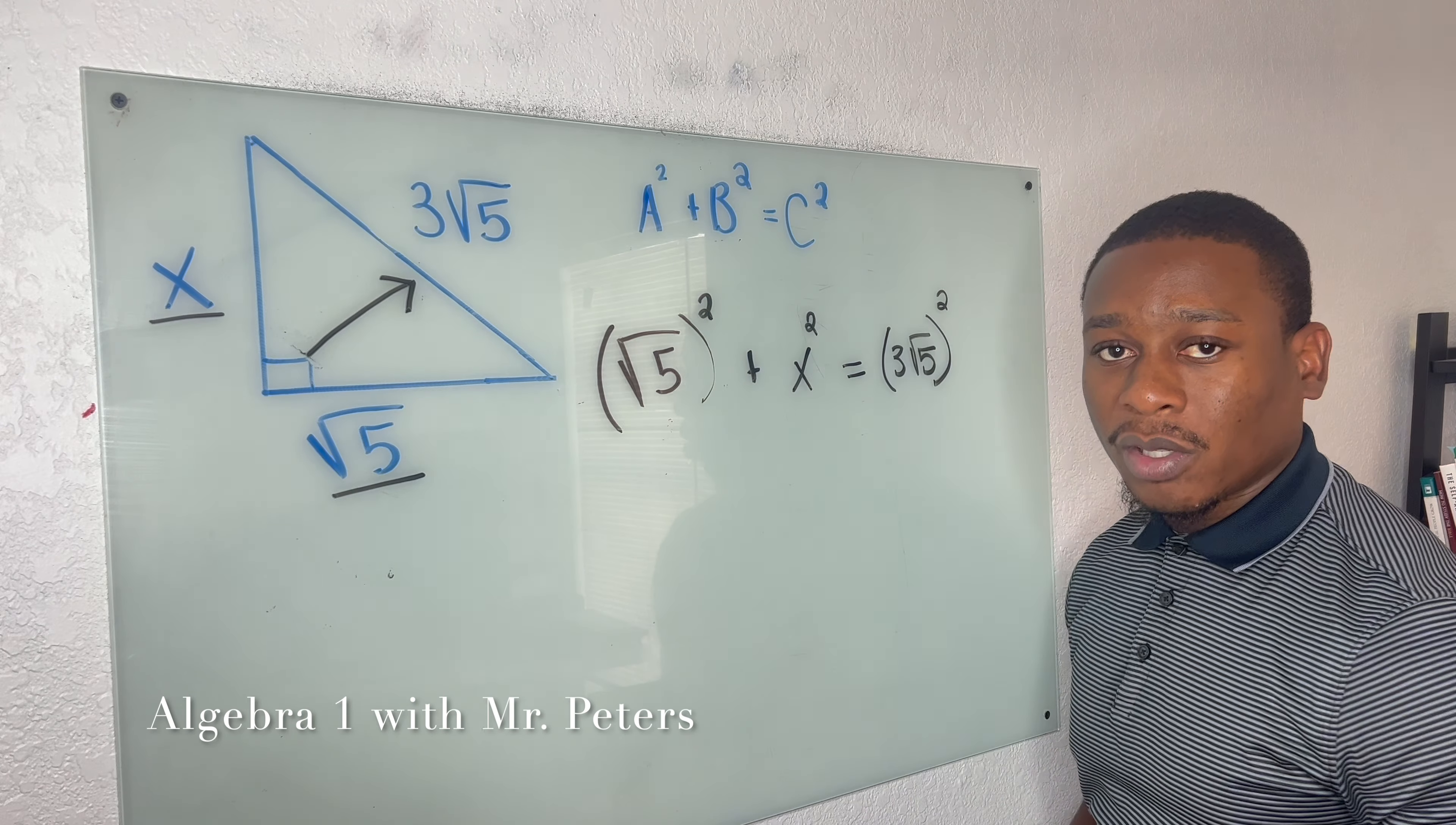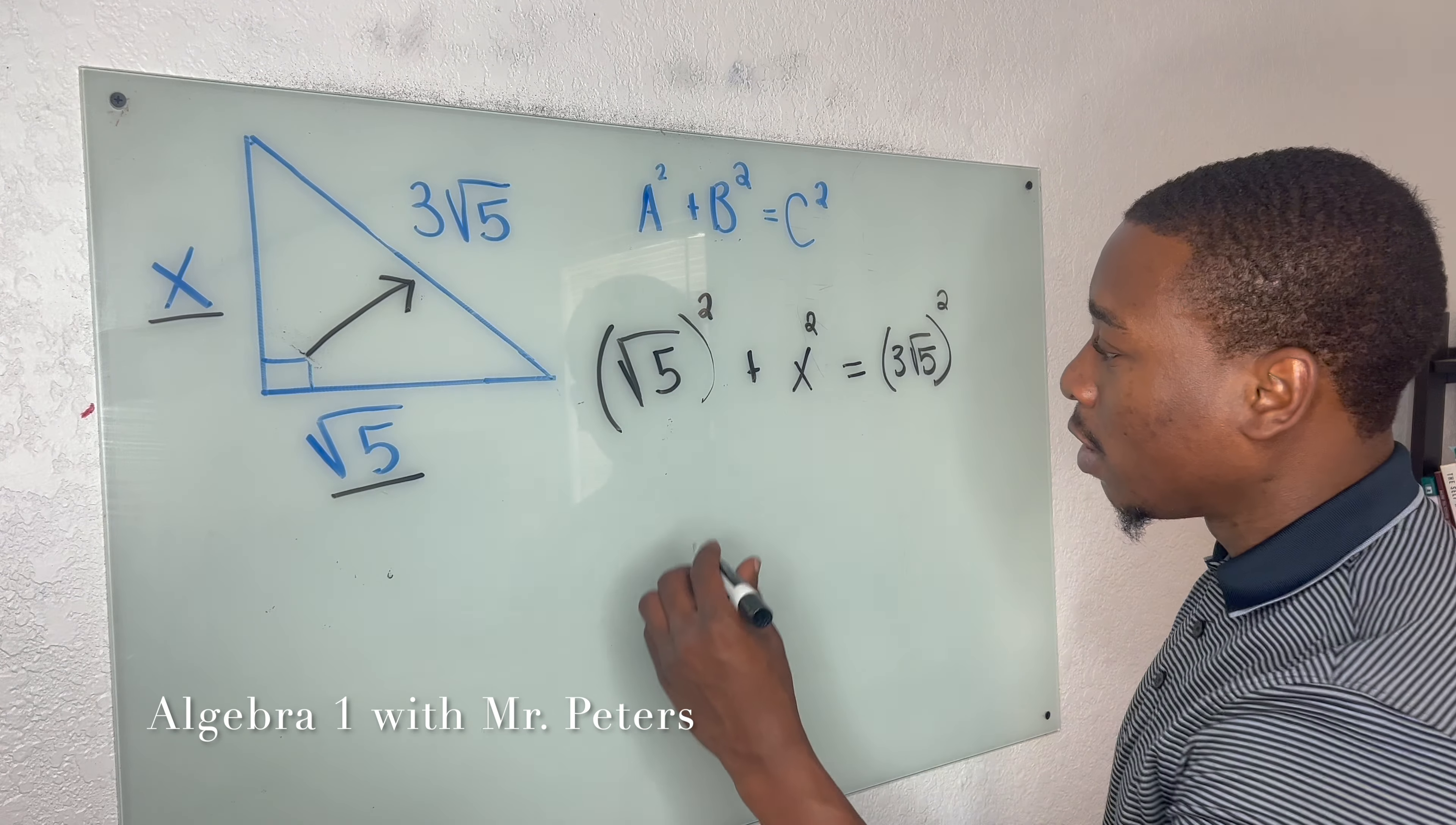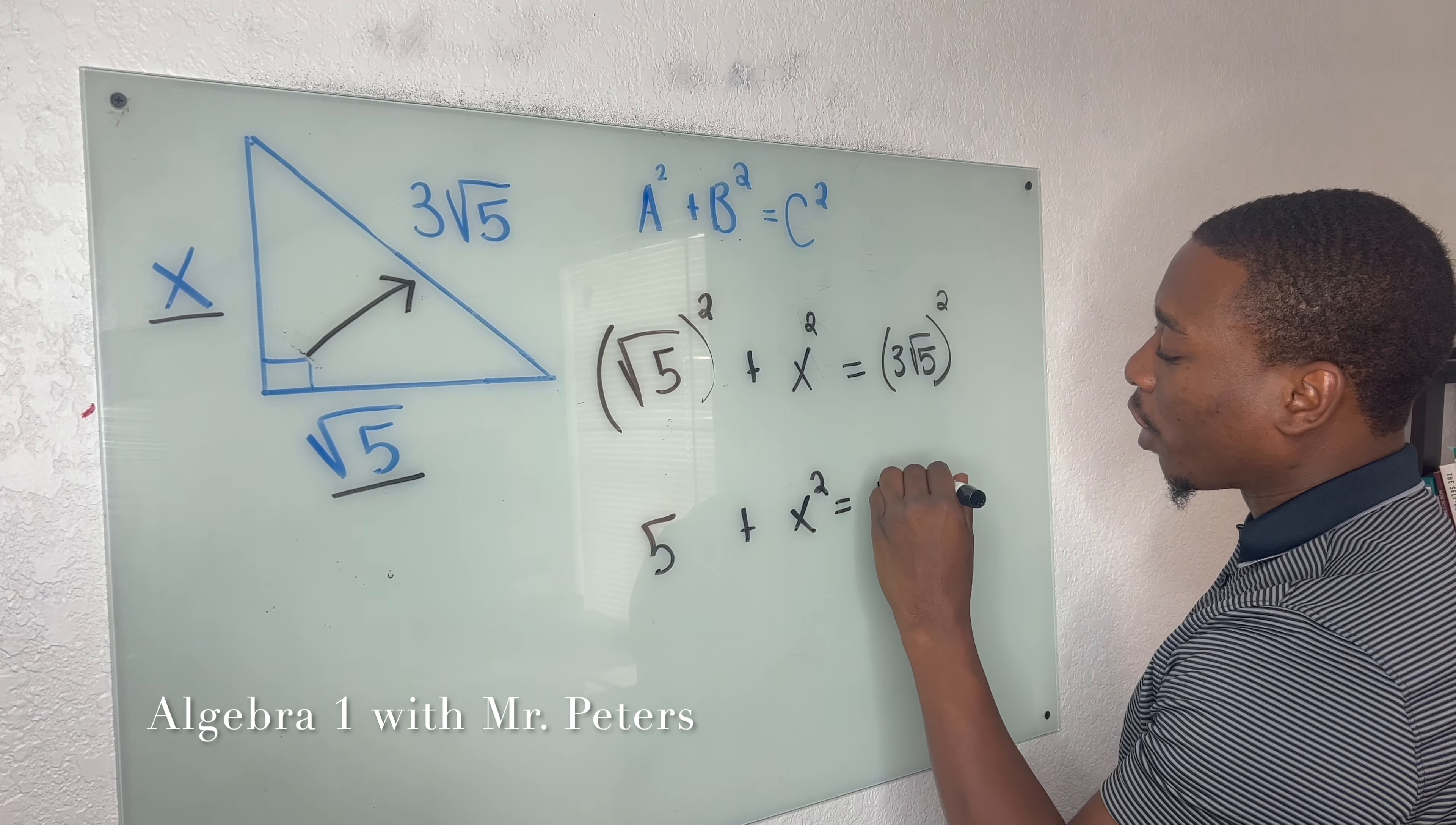It's very important to know that when we square a radical, the answer is just the number under the radical by itself. So this would be 5 plus x squared is equal to 45.